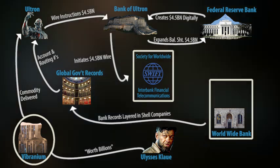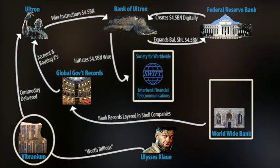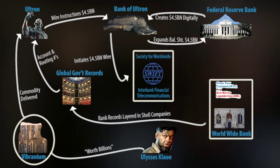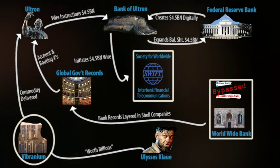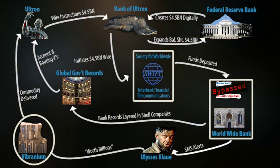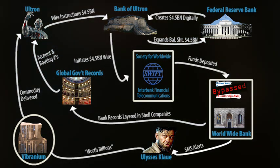Over 24 million such instructions are sent daily. Also, by controlling the banking infrastructure, Ultron would have superseded monitoring systems that are in place for alerting bankers of suspicious monetary activities — through such things as Know Your Customer protocols and other anti-money laundering checks.